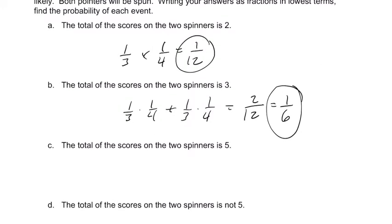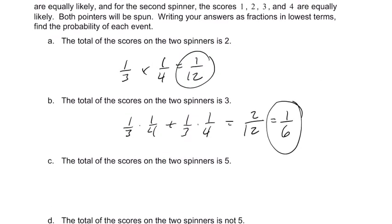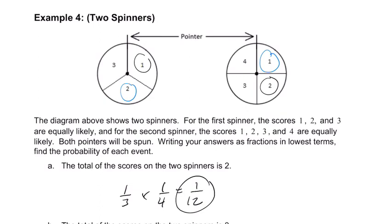Next one: the total of the scores on the two spinners is 5. So there are some ways we can do that. We can get 3 and 2, we can get 1 and 4, and we can get 2 and 3. And that's it.